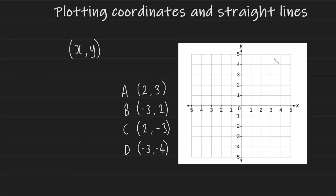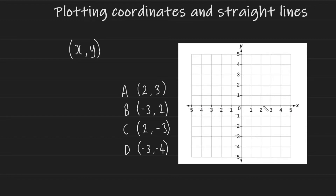So first things first, what we have in front of us here is called a Cartesian coordinate axis, often referred to as an xy axis. We're going to learn how to take these coordinates here and plot them on this axis. The number to the left in your coordinate represents your x value, and this tells us where we are going to be along this horizontal line. The number on the right is your y coordinate, and this tells us where we are going to be vertically.